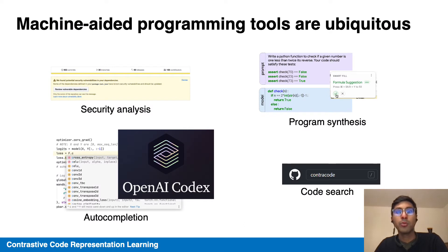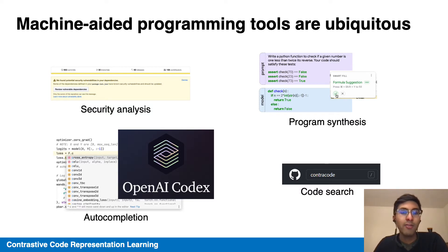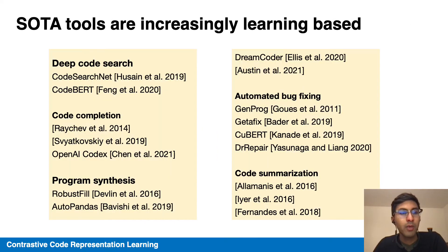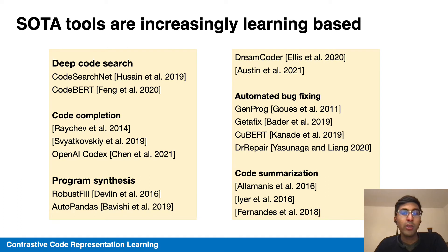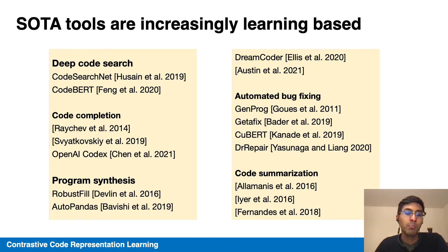Machine-aided programming tools are ubiquitous in programmers' toolbox, from security analysis to synthesis and completion, and even retrieval. State-of-the-art tools are increasingly based on machine learning. These can exploit details like human-written captions, comments, and doc strings, as well as resolve ambiguities that static analysis won't be able to cope with.